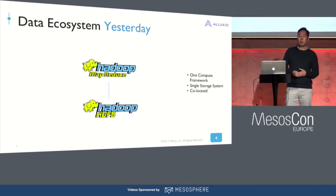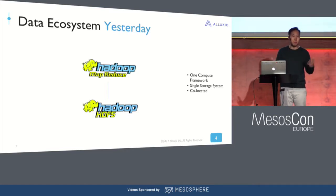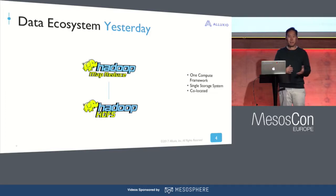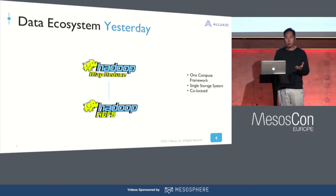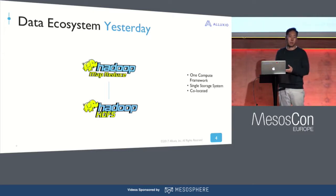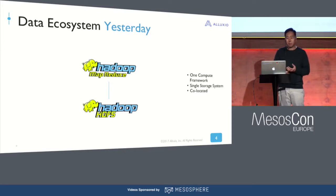Let's talk about the big data ecosystem. Back in the day, say 10 to 15 years ago, it was actually pretty simple. There was basically one framework — the Hadoop framework — where we had Hadoop MapReduce and also Hadoop HDFS for storage. It was a very simple one-to-one mapping.